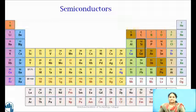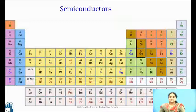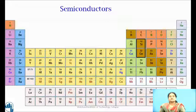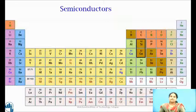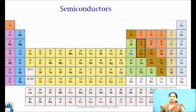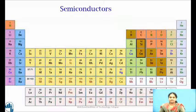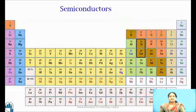Besides these there are certain compound semiconductors such as gallium arsenide, indium phosphide etc which are formed from the combination of the elements of groups third and fifth or second and sixth.